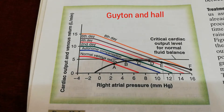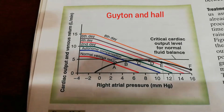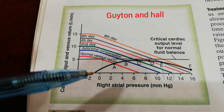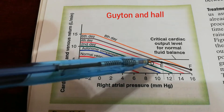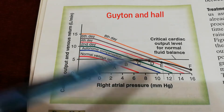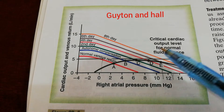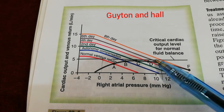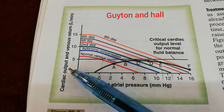This graph is directly from Guyton and Hall. In the decompensated heart failure, the most important thing is that the cardiac output — shown by the black color curve — never goes beyond the line labeled as five liters per minute.